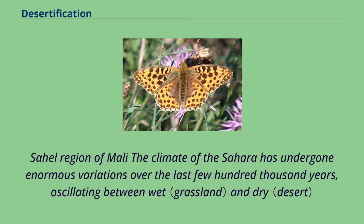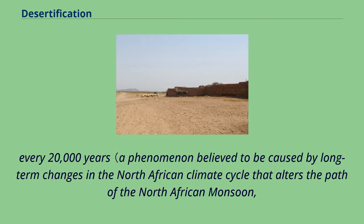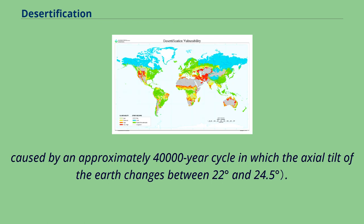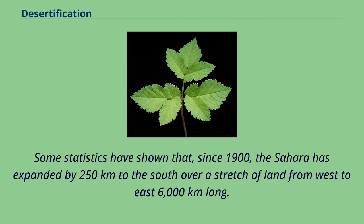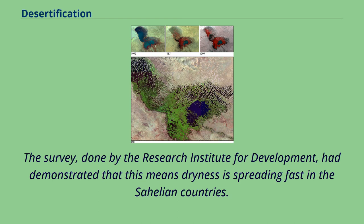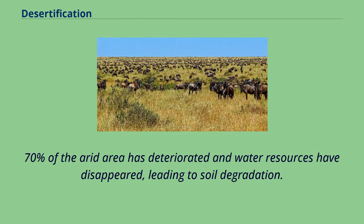The climate of the Sahara has undergone enormous variations over the last few hundred thousand years, oscillating between wet and dry. Every 20,000 years, a phenomenon believed to be caused by long-term changes in the North African climate cycle alters the path of the North African monsoon, driven by an approximately 40,000-year cycle in which the axial tilt of the earth changes between 22 degrees and 24.5 degrees. Some statistics have shown that since 1900, the Sahara has expanded by 250 kilometers to the south over a stretch of land 6,000 kilometers long from west to east. A survey by the Research Institute for Development demonstrated that dryness is spreading fast in the Sahelian countries, with 70% of the arid area deteriorated and water resources disappeared, leading to soil degradation. The loss of topsoil means that plants cannot take root firmly and can be uprooted by torrential water or strong winds.